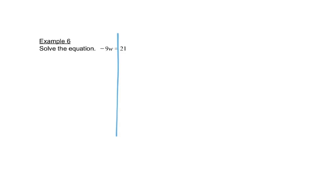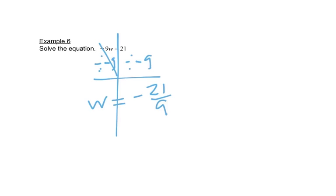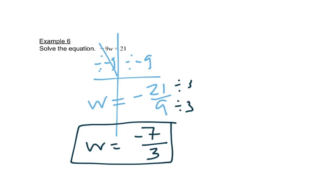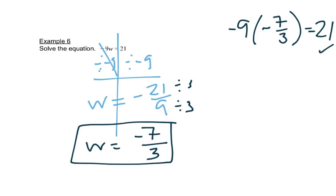Let's look at one more problem. I'm going to draw my line straight down. This says negative nine times W, so I'm going to divide both sides by negative nine. On the left, it cancels out and leaves me with W. Twenty-one divided by negative nine gives a decimal — we don't want a decimal, we want a fraction. So let's write it as negative 21/9, and then we can reduce that because three goes into both. Dividing both by three, I get negative 7/3. Checking: negative nine times negative 7/3 equals positive twenty-one. It checks, so that's the right answer.